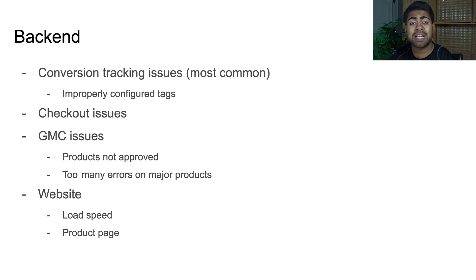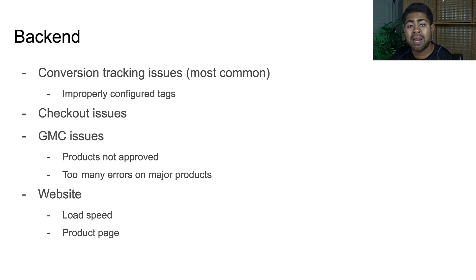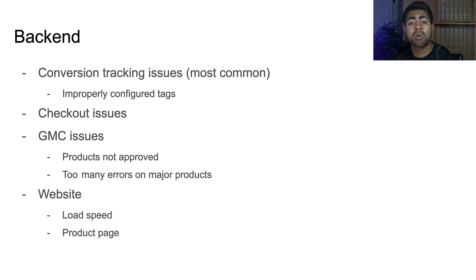The next most important issue is actually on the checkout side. You want to go on your website from start to finish — add a product to cart, go to the cart page, go to the checkout page, and actually try to buy something. Create a coupon code that gives you 99% off and actually try to buy something to see if it's working. A lot of the time, people enter their credit card info and their Stripe account is not set up properly, or PayPal is not accepting payments — payments just get denied. Google Ads won't tell you there's an issue with checkout, so you need to manually go in and check that yourself.